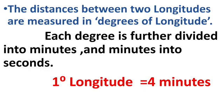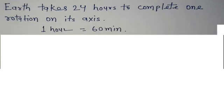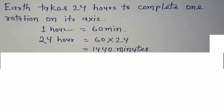Now let us see how we can calculate this. You all know Earth takes 24 hours to complete one rotation on its axis — it means it takes 24 hours to complete one full circle. One hour equals 60 minutes, and 24 hours equals 1440 minutes. So Earth takes 1440 minutes to complete one full rotation.